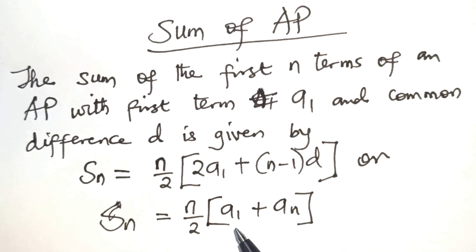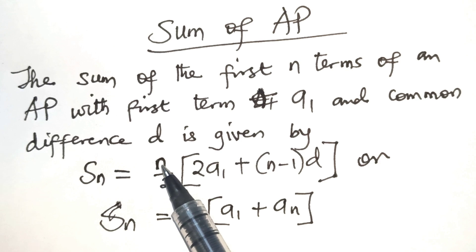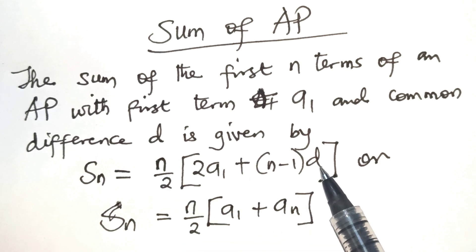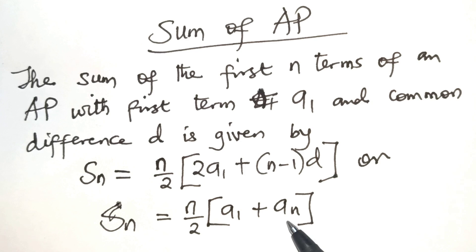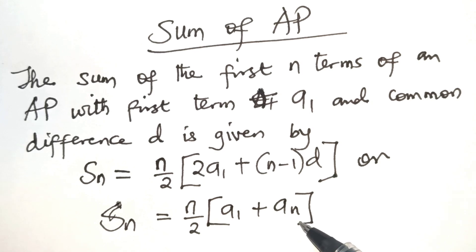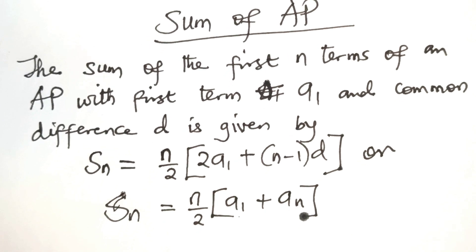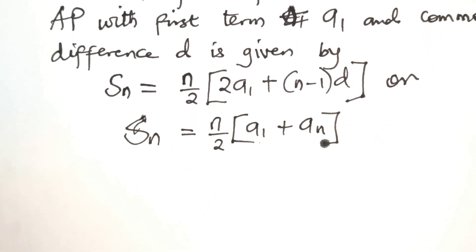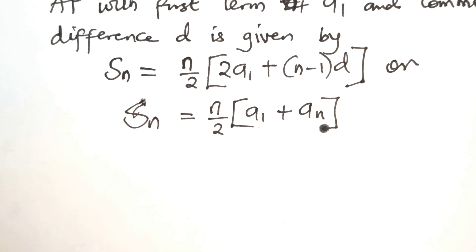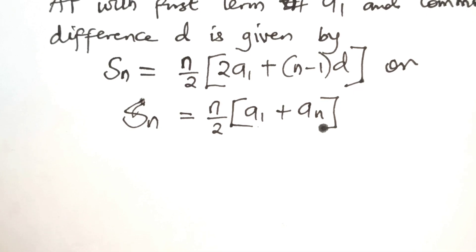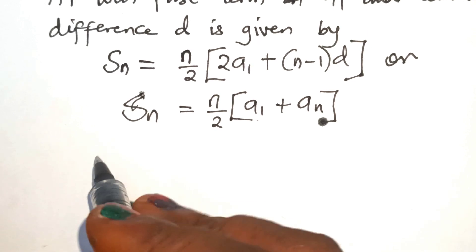Here, A1 is the first term, n is the number of terms, D is the common difference, and An is the last term. This formula is very useful when the last term and the first term are known. We are going to solve three examples using the sum of the AP.